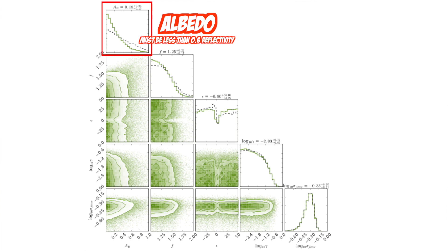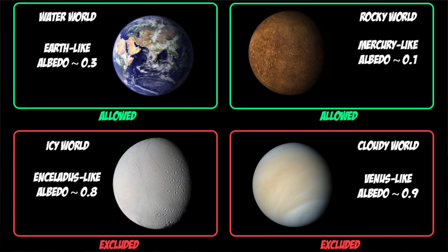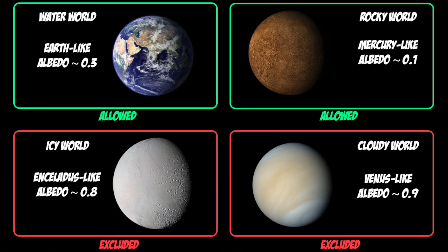From these fits, we were able to constrain the maximum albedo of the two ensembles to 95% confidence. For the Earth-like ensemble, we determined that the average bond albedo is capped at about 0.6. In other words, it's very likely that most of the planets in the Earth-like ensemble reflect less than 60% of the light from their host star. Basically, what we can conclude is that most of these planets aren't covered in ice — so they're not like Enceladus or Europa — and they're probably not covered in highly reflective clouds, so they won't resemble Venus. If anything, they probably resemble something more like Mercury.